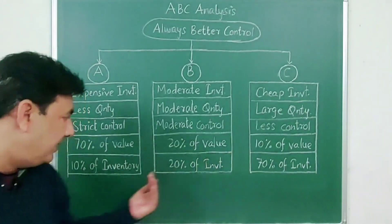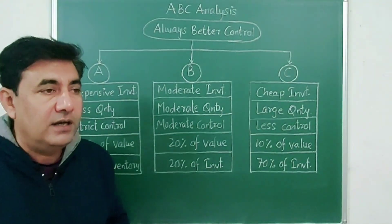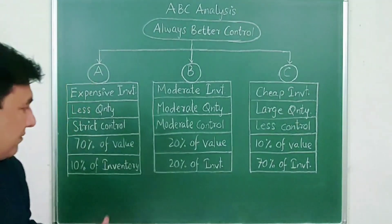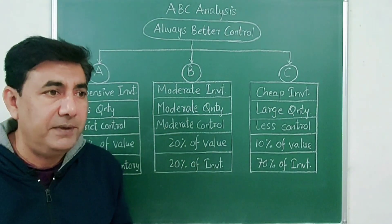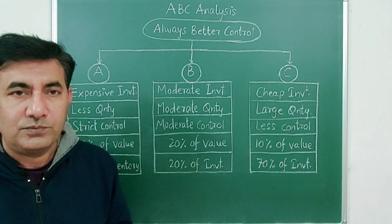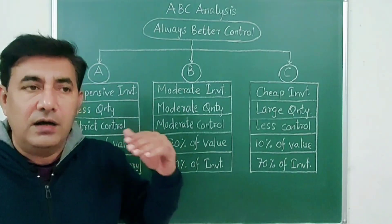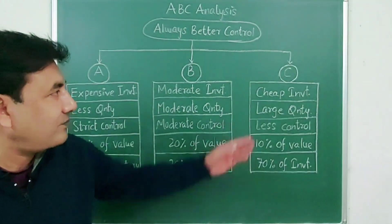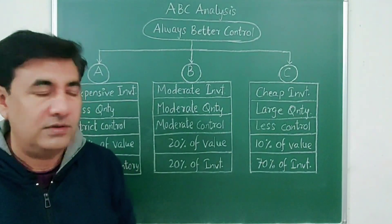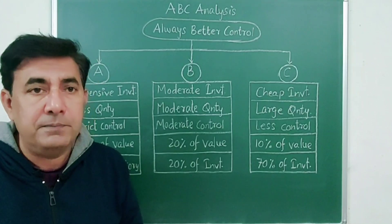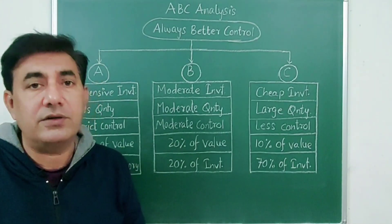Third, for category A we need strict control. The managers take a very strict disciplined control over category A items because they are very expensive. And here moderate control is required and in category C relatively less control is required because they are cheap items. Let's go to the fourth one. 70% of the value. Now 70% of the value means out of the total expenses, for category A we have to spend 70% of our money on category A items due to their expensiveness. And in moderate we only consume 20% of the value, 20% of our budget. And for category C it is only 10% of our budgeted value.